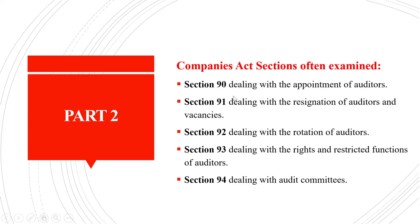The section you need to know from the Companies Act regarding this aspect is Section 90, dealing with the appointment of auditors; Section 91, dealing with the resignation of auditors and vacancies; and Section 92, which deals with the rotation of auditors — for example, after every five years, registered auditors to an audit firm have to be rotated, meaning changed after every five years.